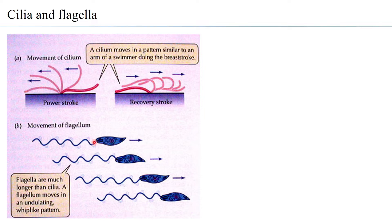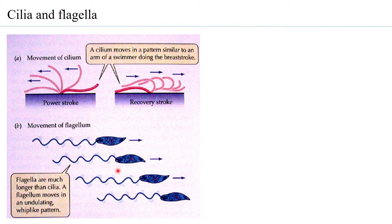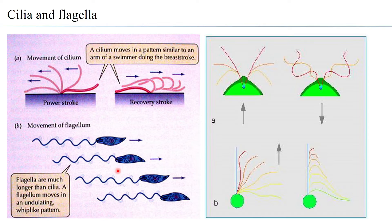The flagellum present at the end of the sperm is also able to undulate in a whip-like pattern, and because of that, the entire sperm is propelled forward due to the movement of the flagellum.